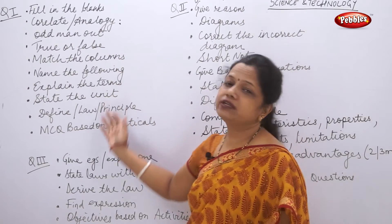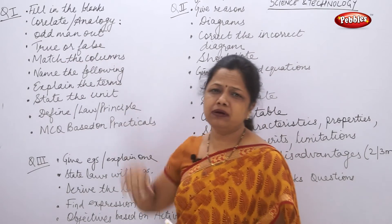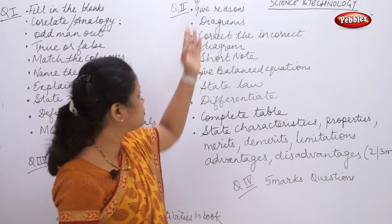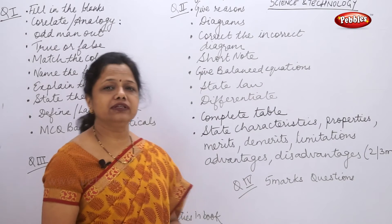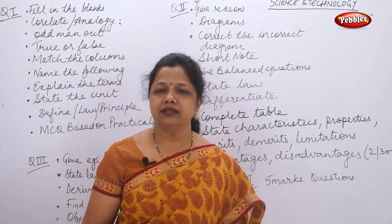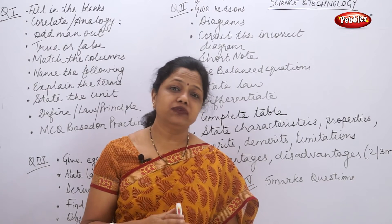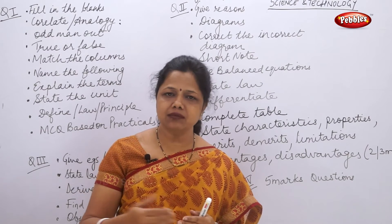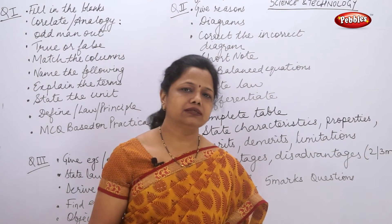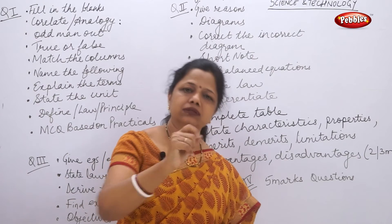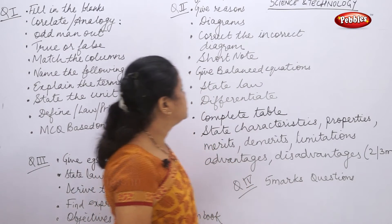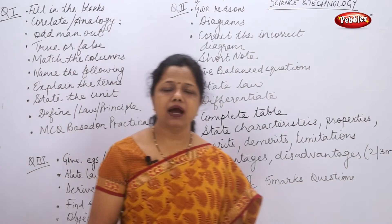In question 2, the first type observed is 'give reason.' Give reason means they need a scientific reason. Always do not start your answer with 'because.' Write the sentence first and then write 'because it happens so and so' — do not start your answer directly with because.